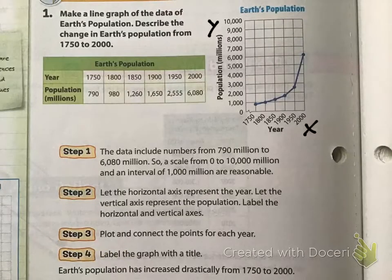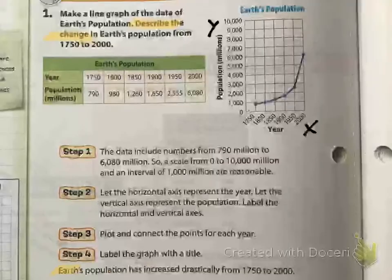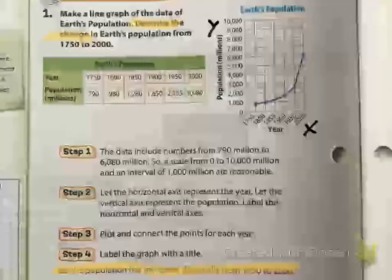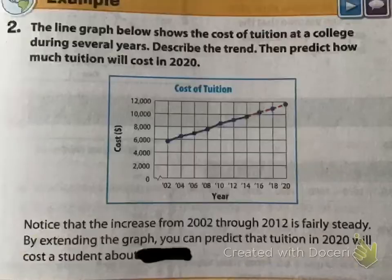Then label the graph with a title. Describe the change: it increased drastically — it went up drastically. That's how you interpret a line graph.